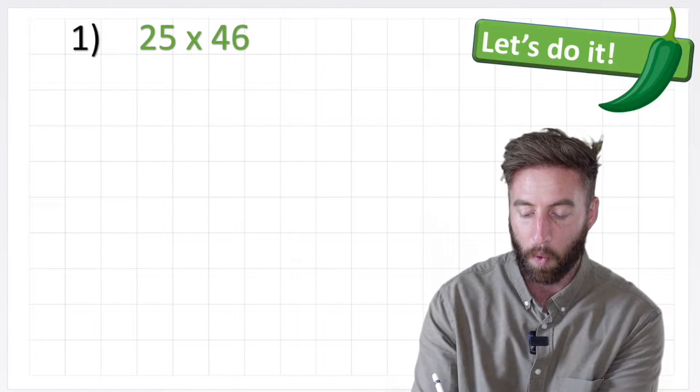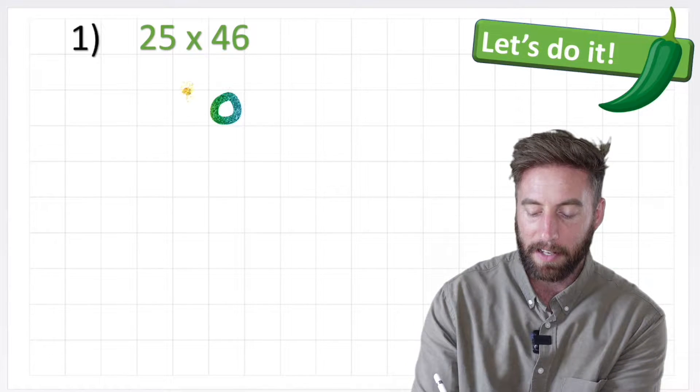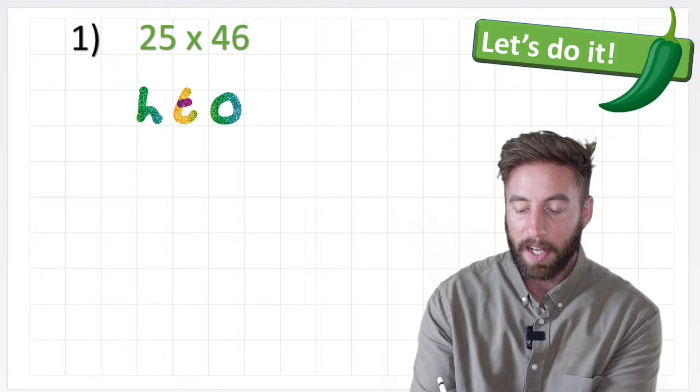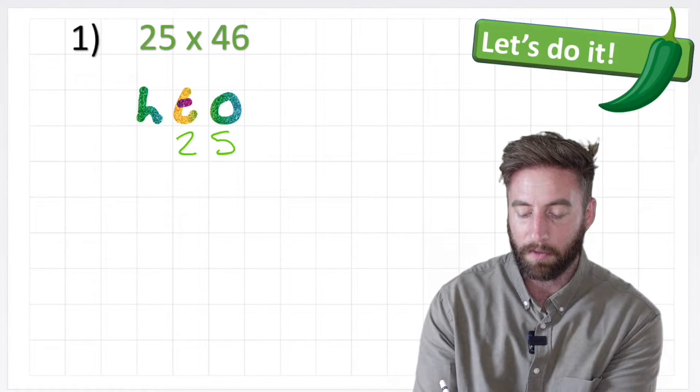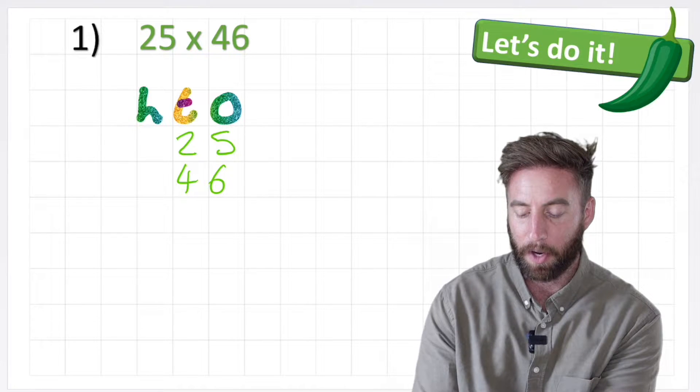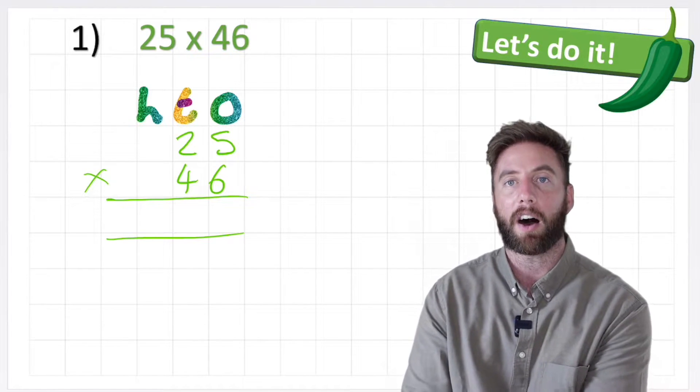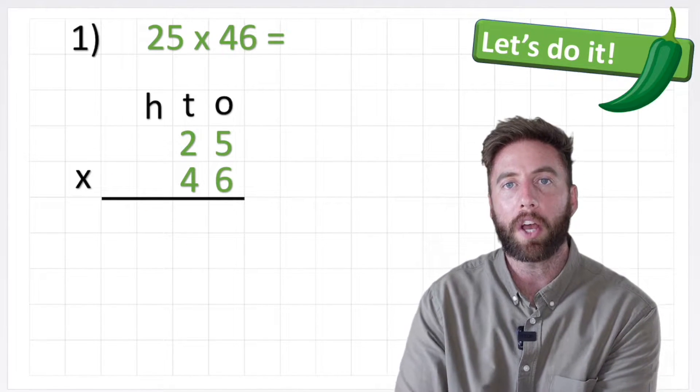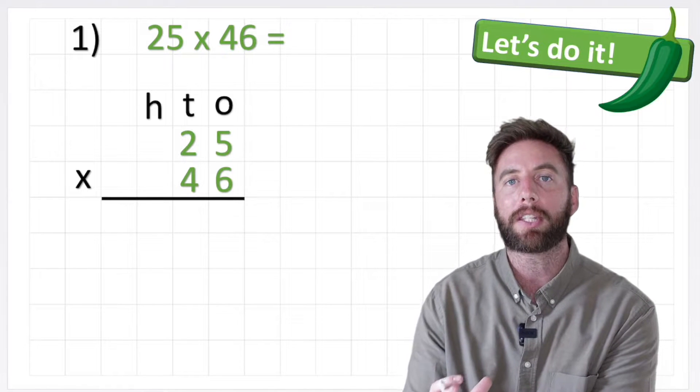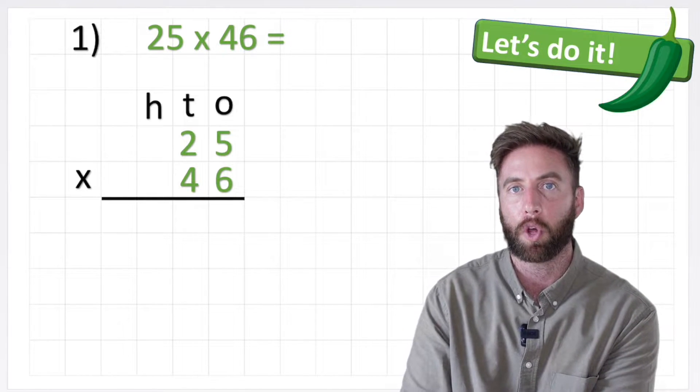So the first thing we're going to do is put our ones, tens and hundreds, and then we're ready to put our numbers. So we've got 25 times 46. Put our equals lines and I'm ready to start. Let's just make that a little neater. Here we go. So we can't answer this in one go so we're going to partition it, which means break it into some smaller questions.